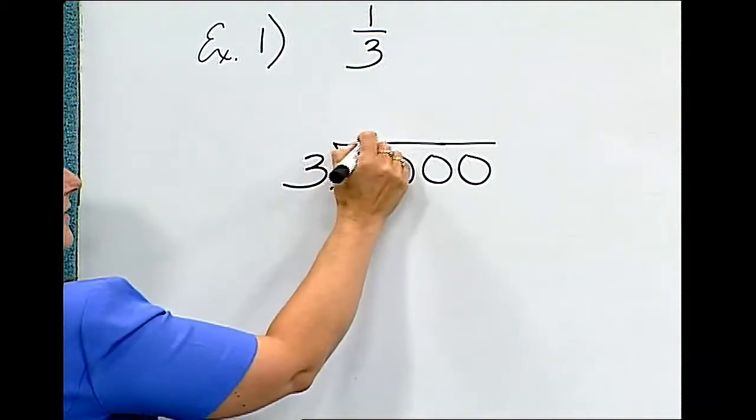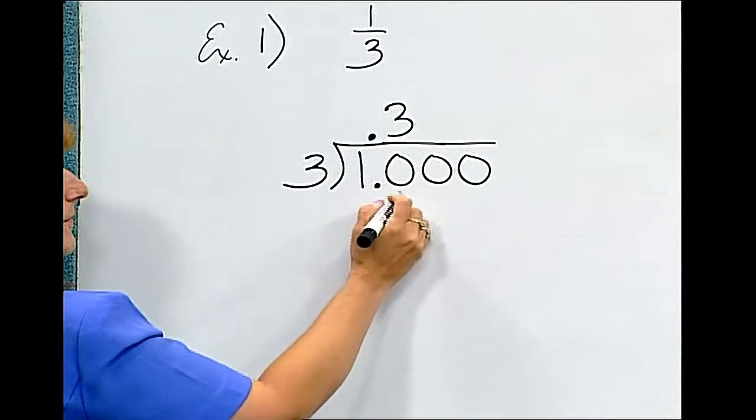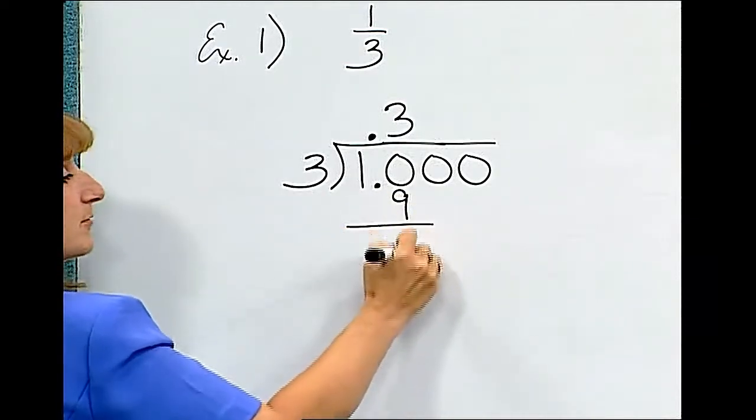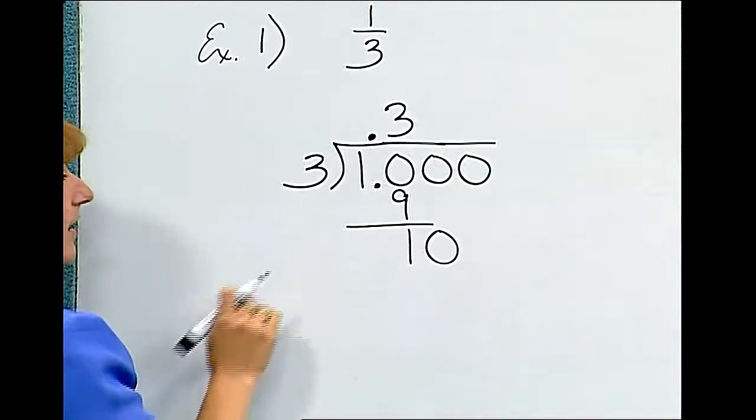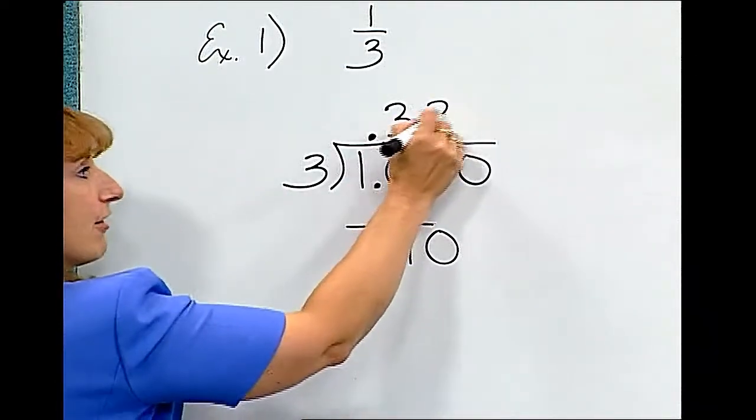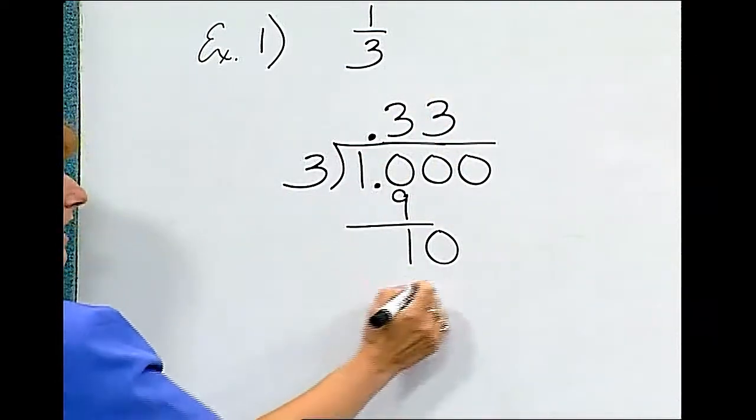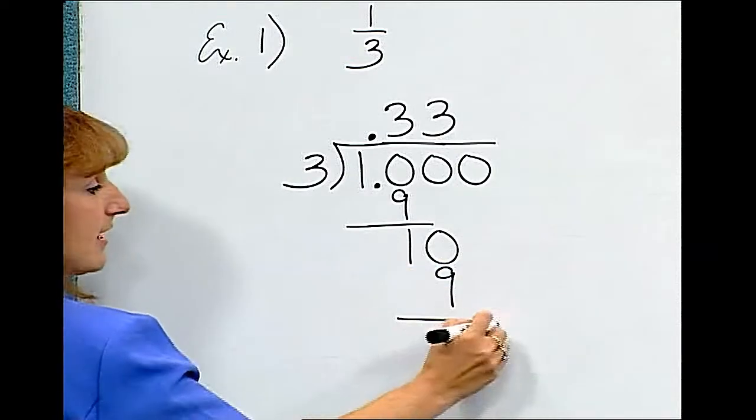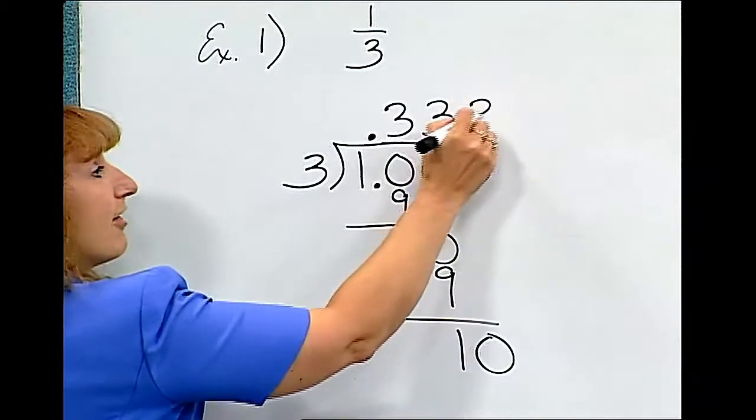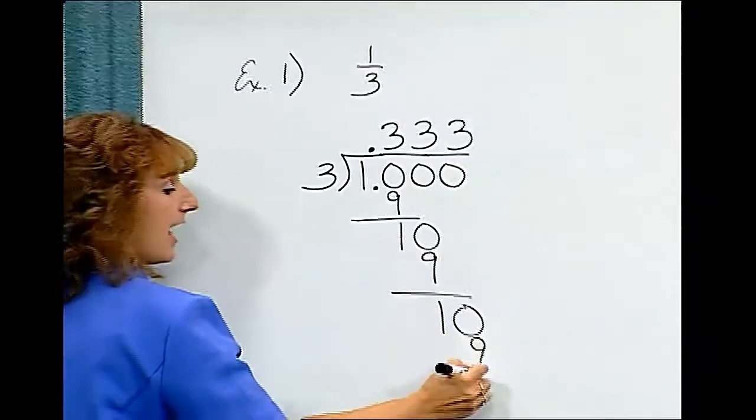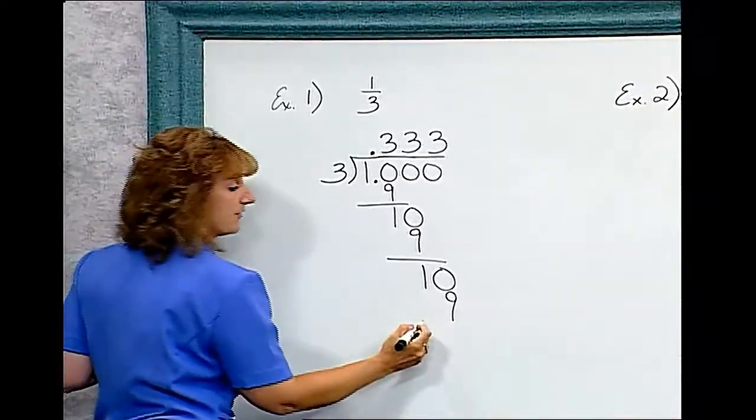We're going to place our decimal point and place some zeros. Three goes into ten three times. When I subtract and bring down the zero, I get another ten. Three goes into ten three times. As you can see, there is a pattern here.